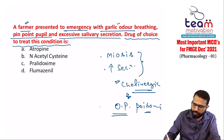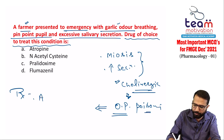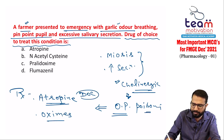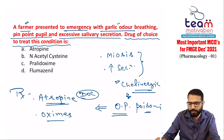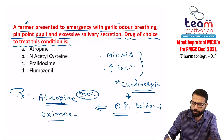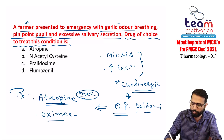Drug of choice for organophosphate poisoning: we use two drugs — atropine and oximes. Atropine is the drug of choice and the best antidote and life-saving drug. Repeat atropine injections until signs of atropinization appear — the first sign being mucosal dryness. Continue until mucosa gets dry.